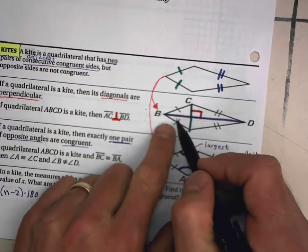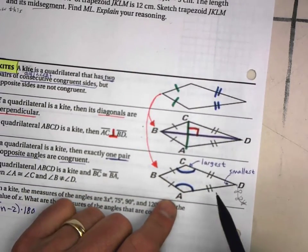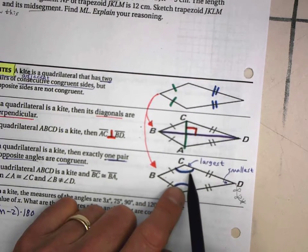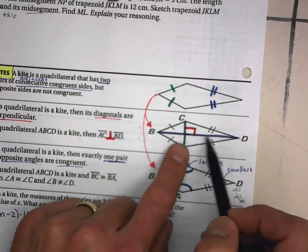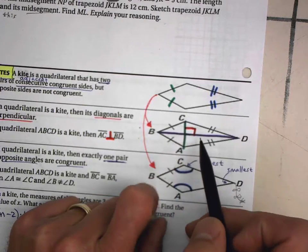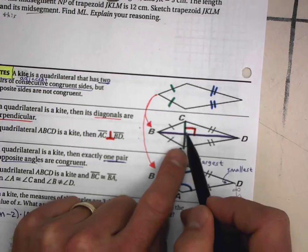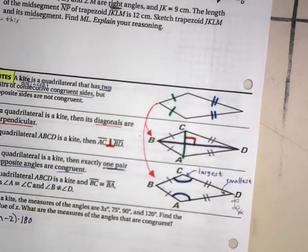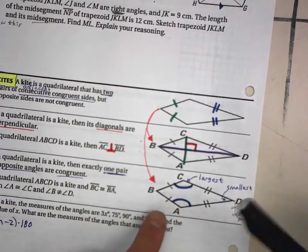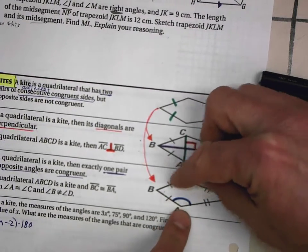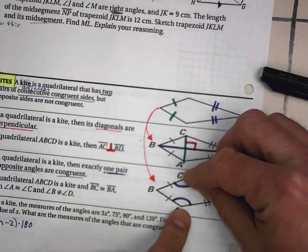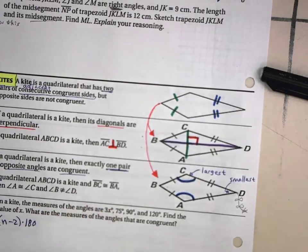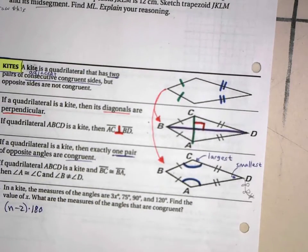So once you know it's a kite, then you know for sure that the diagonals are perpendicular, and you also know for sure that one pair of opposite angles are congruent with each other. And I'm pretty sure that the converse is also true. Not for these angles, but it would be true for the diagonals. If the diagonals are perpendicular, then that is proof that it is a kite. But not the case for this, because you can think of another way to move this around and create something that's not a kite. So the converse of this one is not true. Okay, so kite has some cool qualities to it.